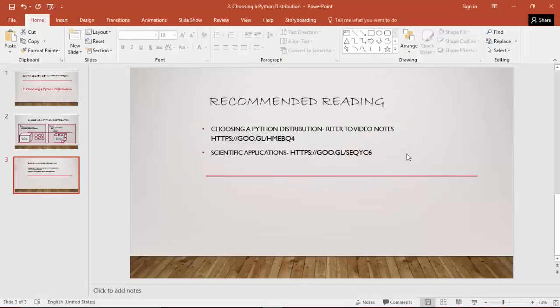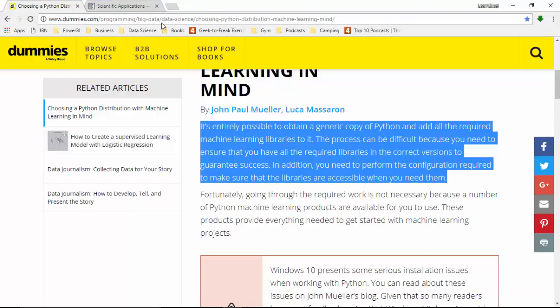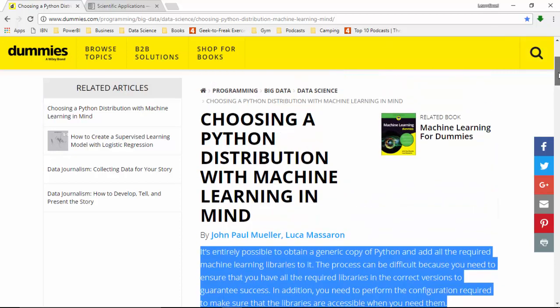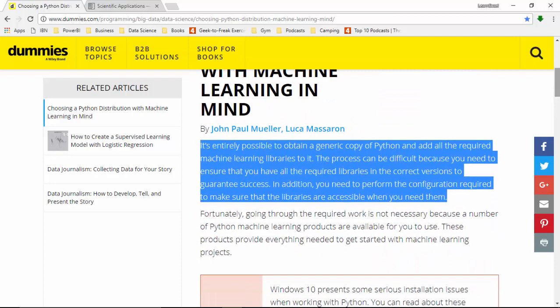Let's just go here - I've already got it open. So this is one site I went through, which says 'Choosing a Python Distribution with Machine Learning in Mind.' It says it is entirely possible to obtain a generic copy of Python and add all the required machine libraries to it.